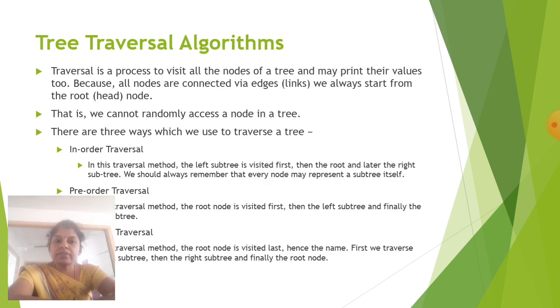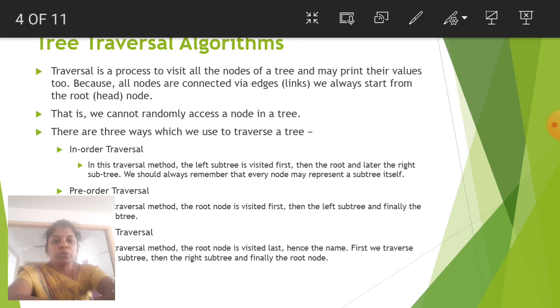Next is tree traversal algorithm. Traversal is a process to visit all the nodes of a tree and may print their values too. Because all nodes are connected via edges that is links, we always start from the root node which is called as head node. We cannot randomly access a node in a tree. There are three ways which we use to traverse a tree: in-order traversal, pre-order traversal and post-order traversal.